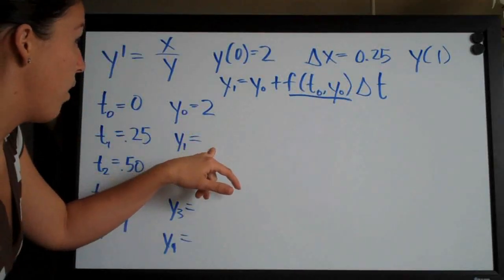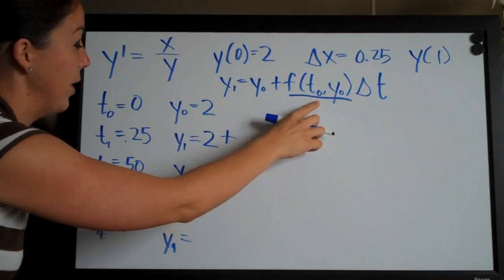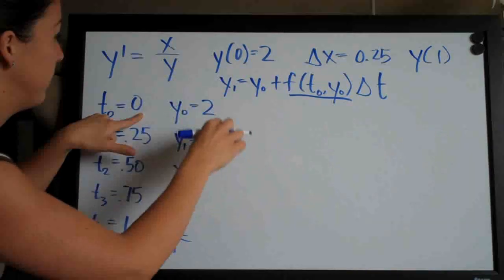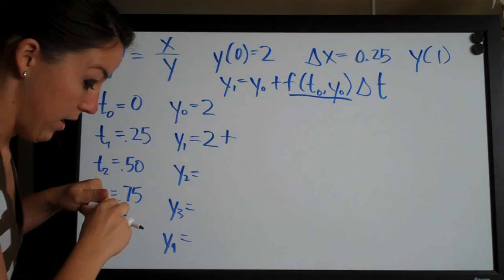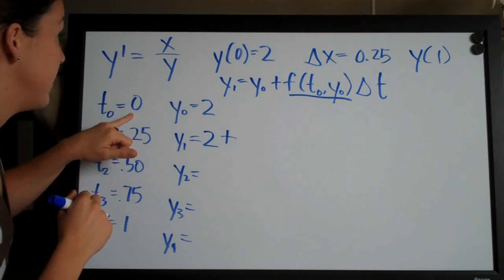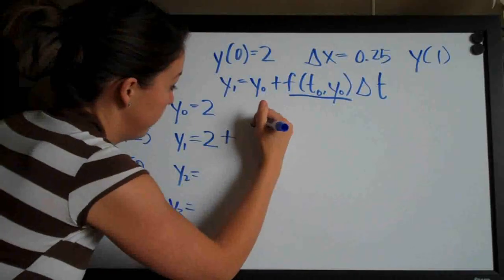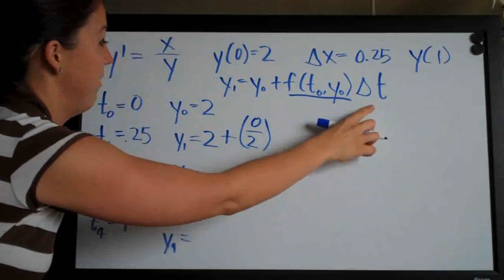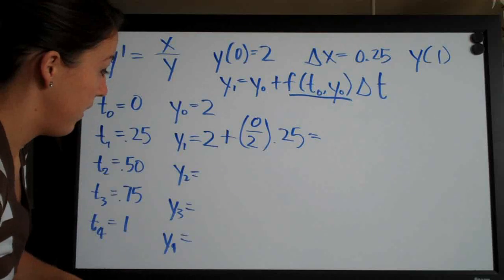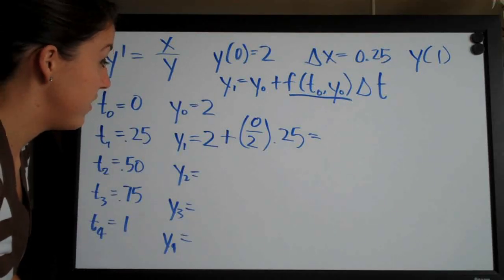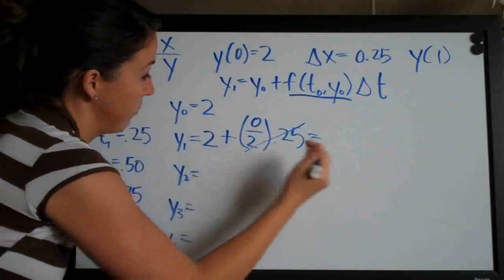So let's go ahead and apply that here to y1. We have y of 0, so 2, which we pull from here, plus plugging in t0 and y0 to the original function. So we have x over y, and this is actually going to be 0 over 2, because we're plugging in t values wherever we have x and y values wherever we have y. So we'll get 0 over 2, and then we multiply that by delta t, which we have as 0.25. So that's our equation for y of 1. Now we just need to simplify that. Of course this is going to be 0, so this 0 times 0.25 is going to be 0. That's going to go away and we'll just end up with 2.